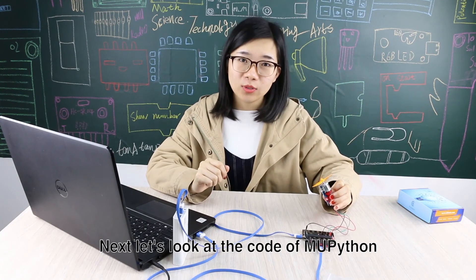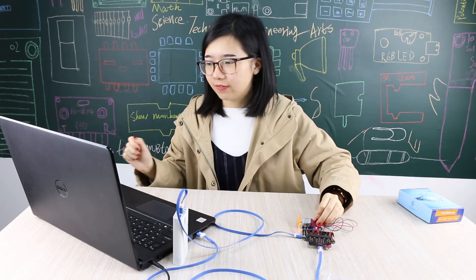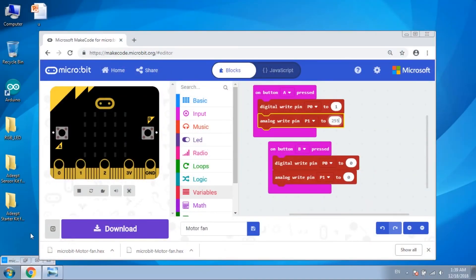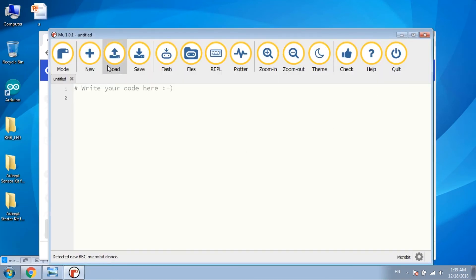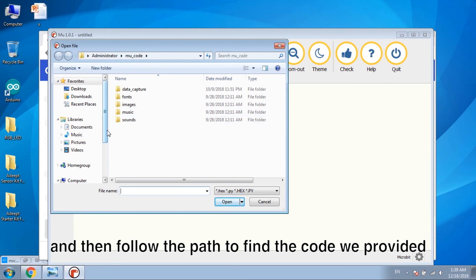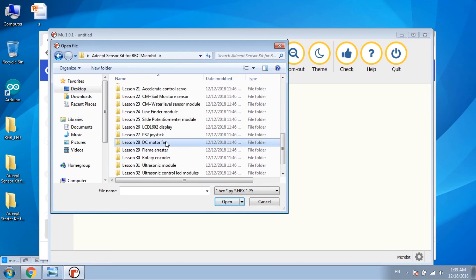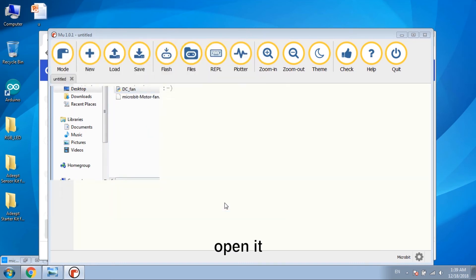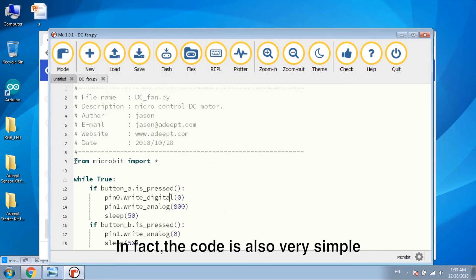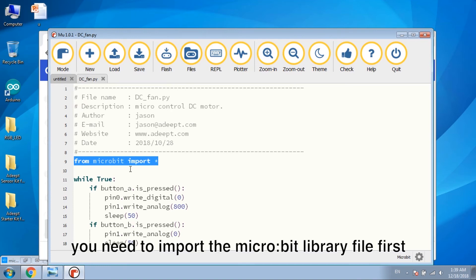Next, let's look at the code in Python. Open new and then follow the path to find the code we provided. Open it. In fact, the code is also very simple. You need to import the micro:bit library file first.